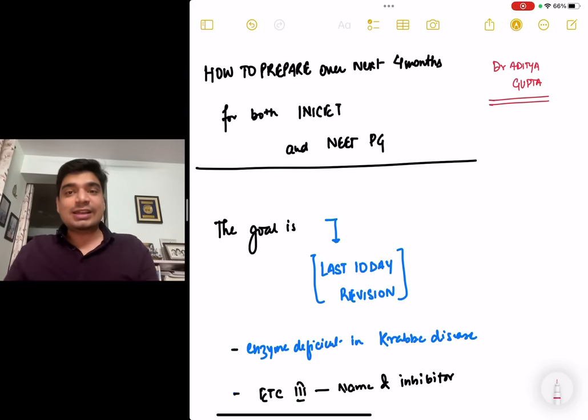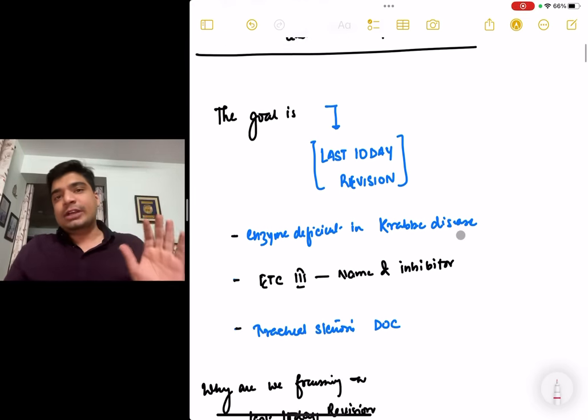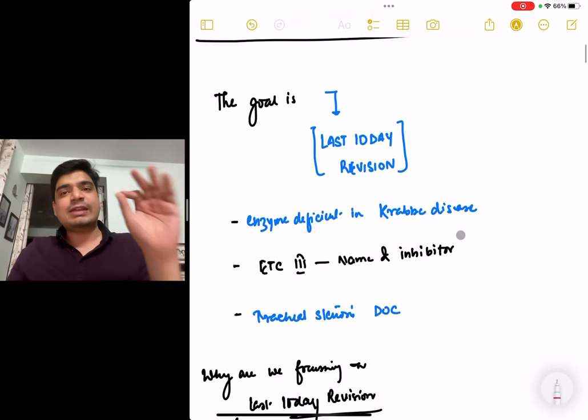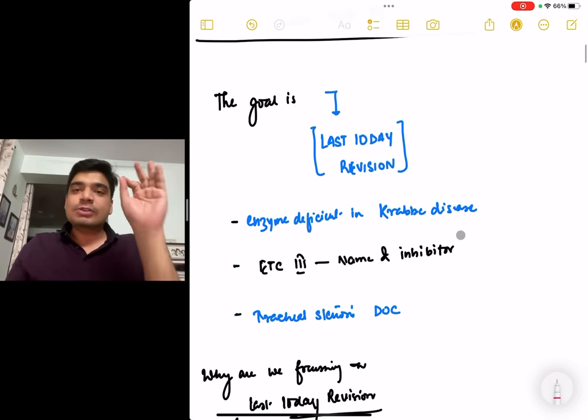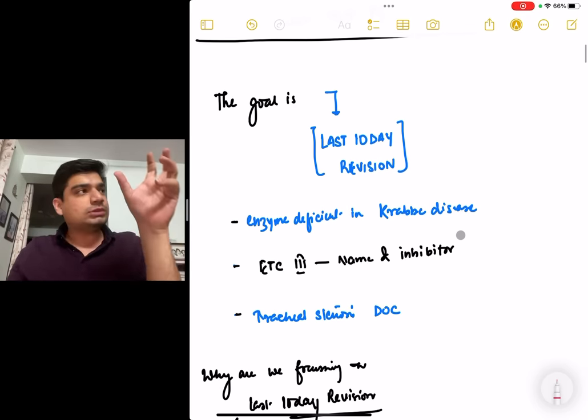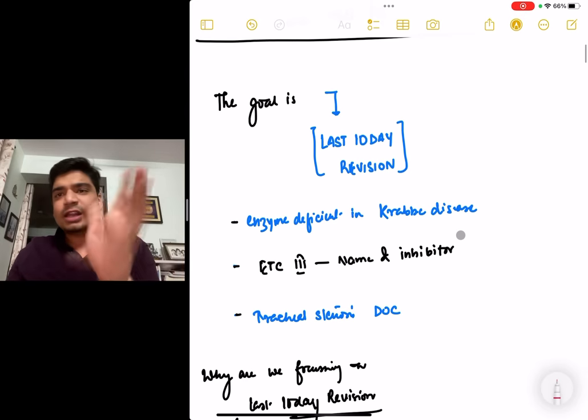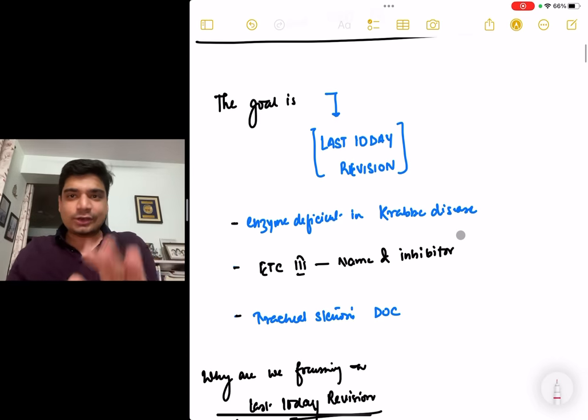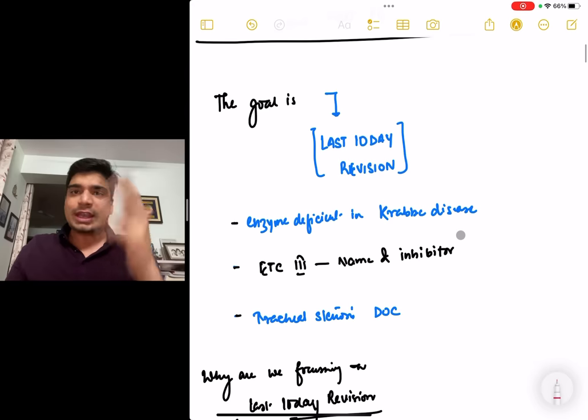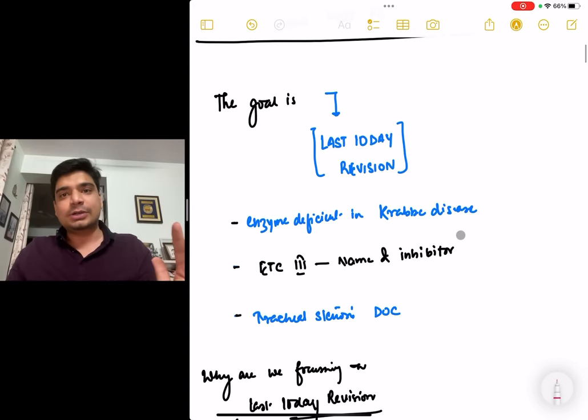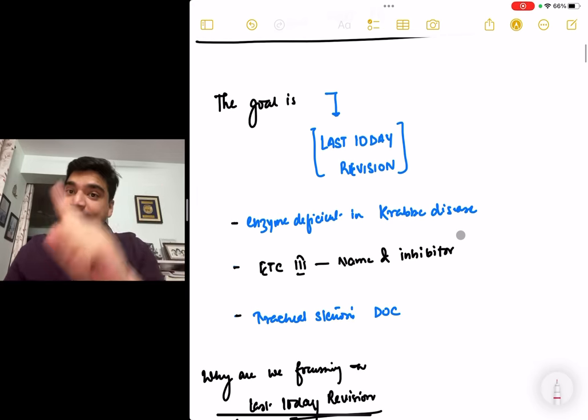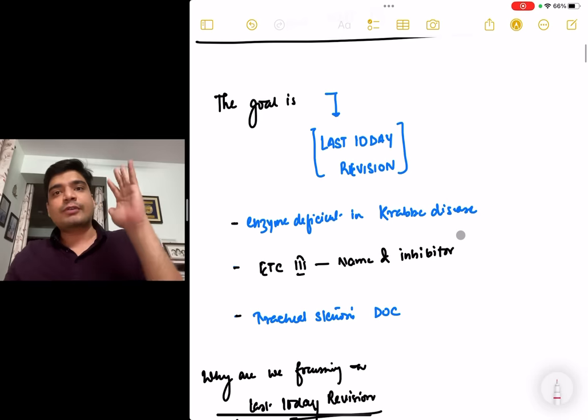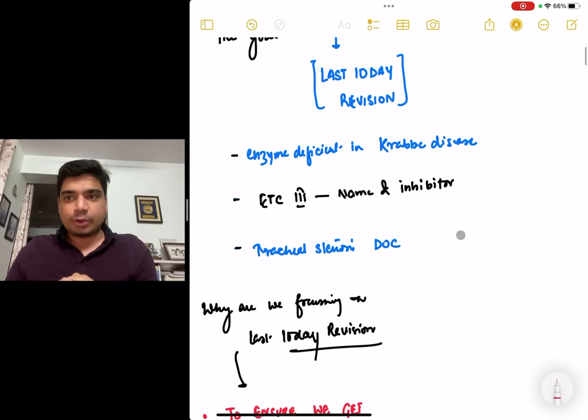Why is the last 10-day revision important? If you are preparing for NEET PG, tell me the answer to these 3 simple questions. Which is the enzyme deficient in Krabbe disease? Which is the electron transfer chain type 4, 3 and type 3? What is the name and its inhibitor? And the drug of choice for tracheal stenosis. I don't know the answer to any of these questions, but I do remember these are previous year questions. You might have read about these things but still would have forgotten them.